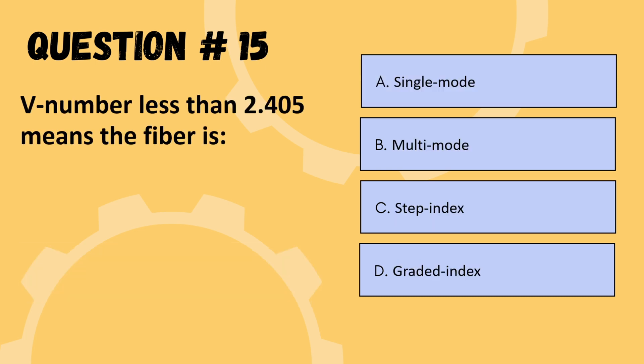Next question: V number less than 2.405 means the fiber is — options are single mode, multi-mode, step index, or graded index. The correct option is A: single mode.